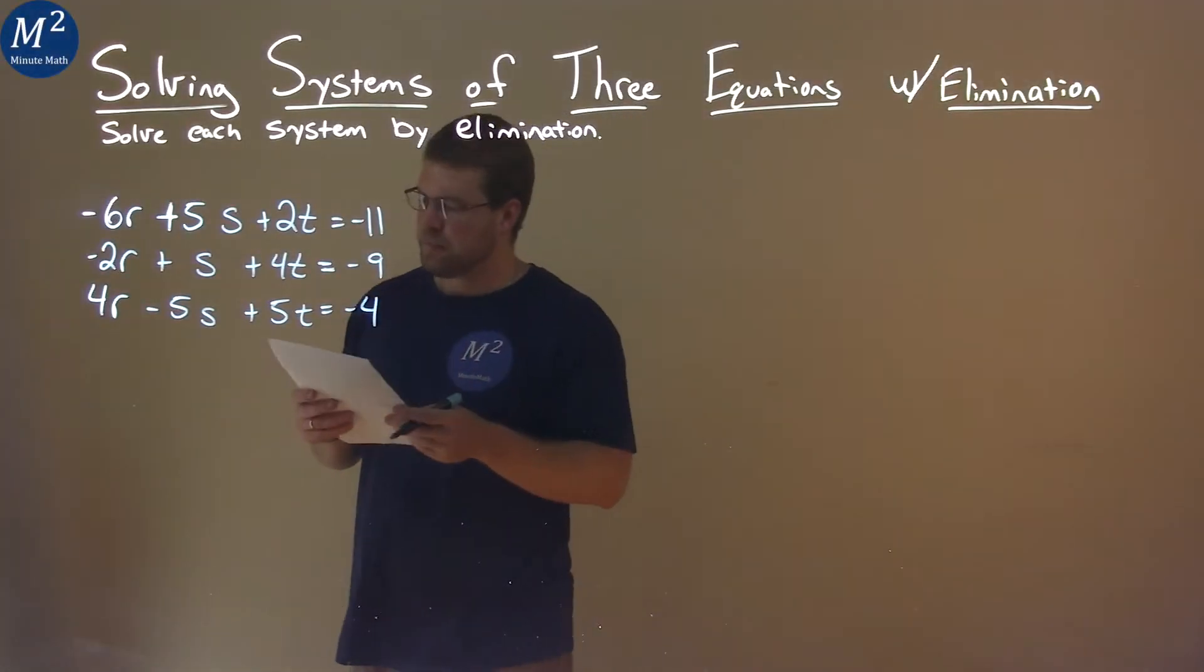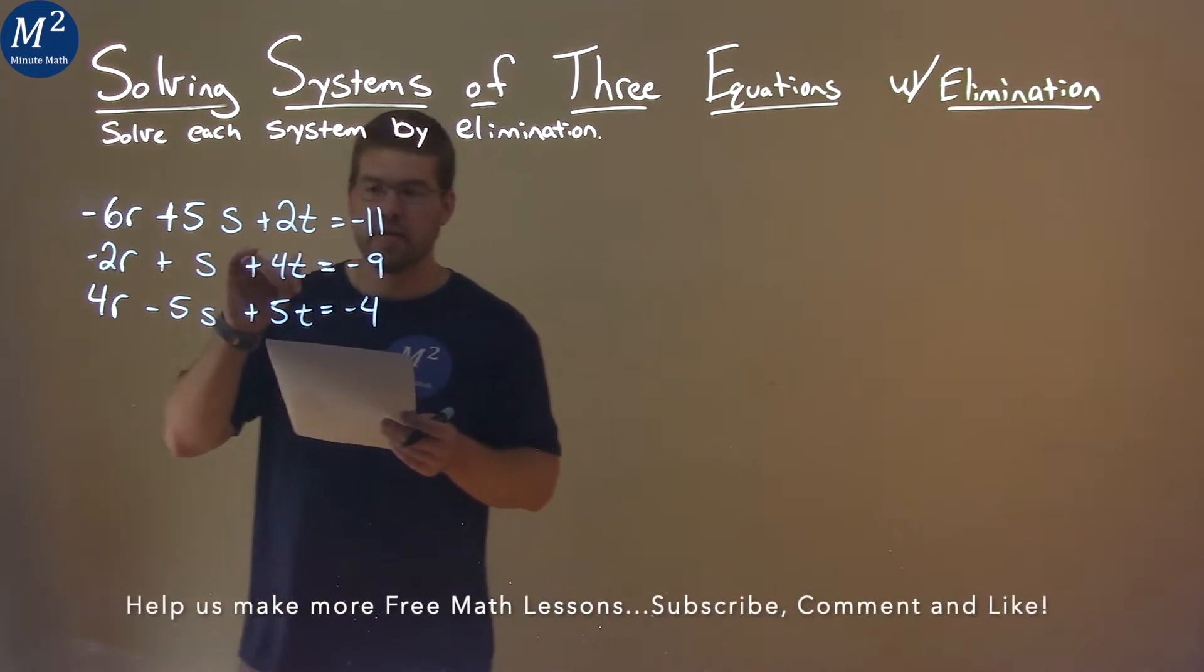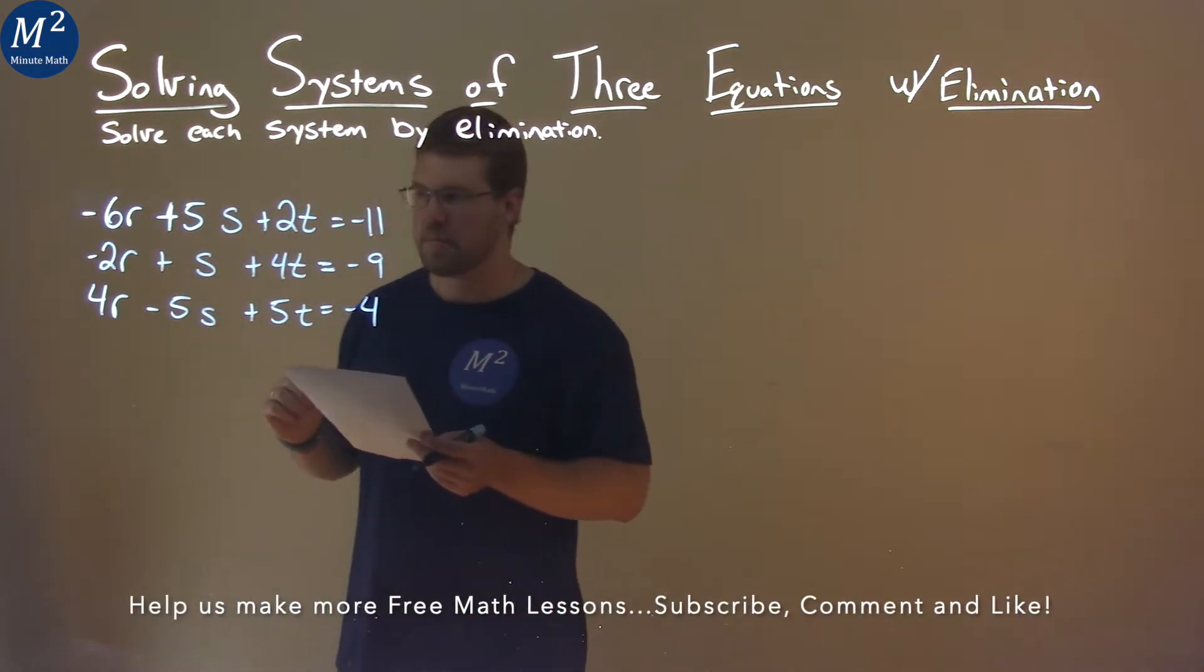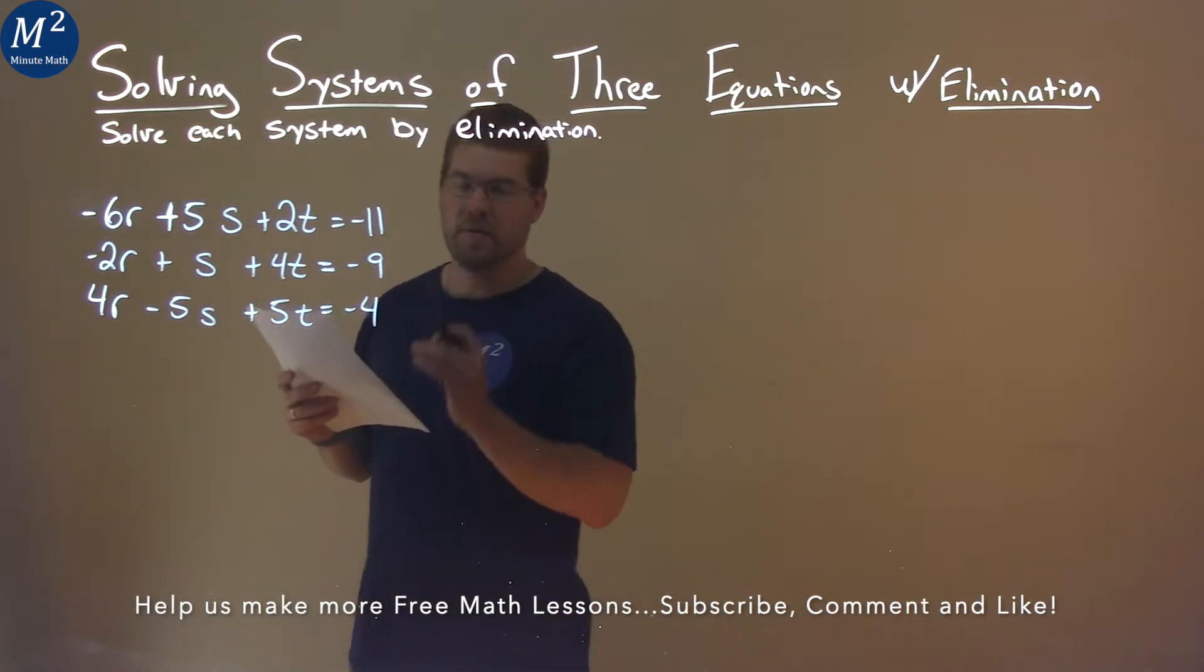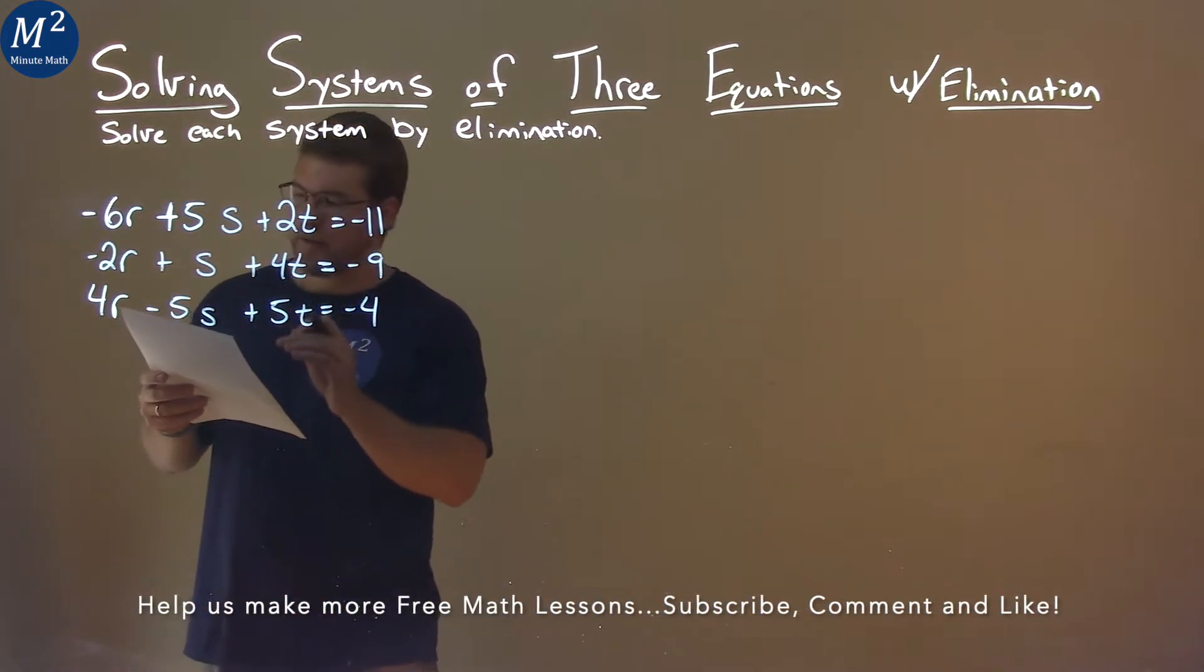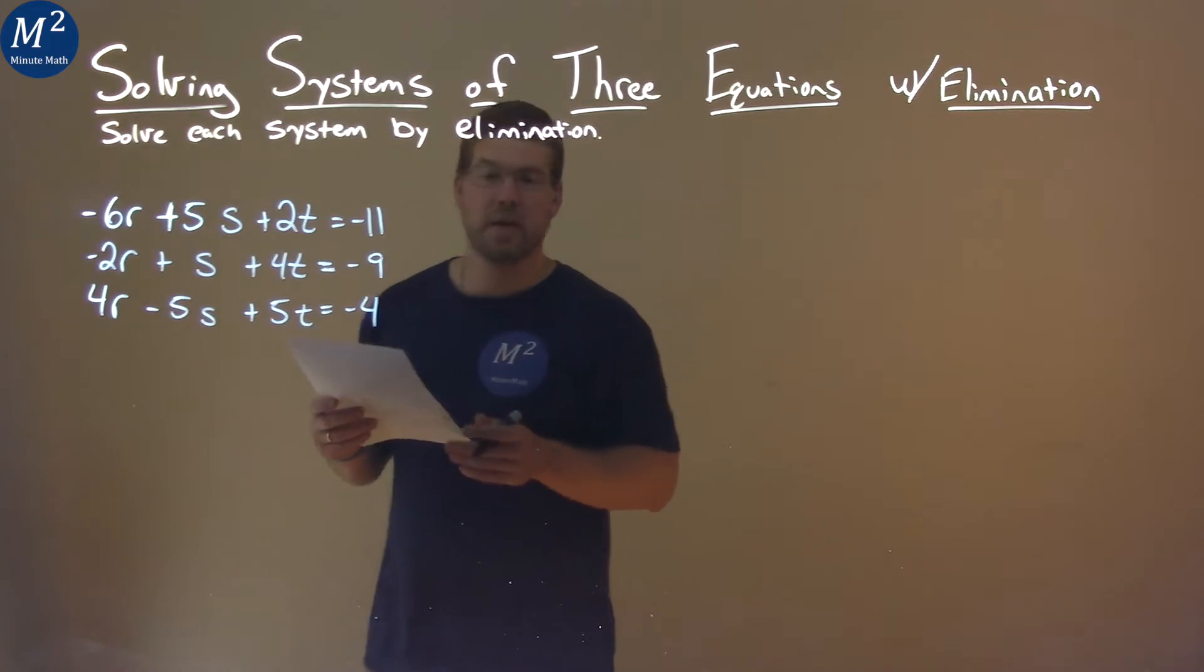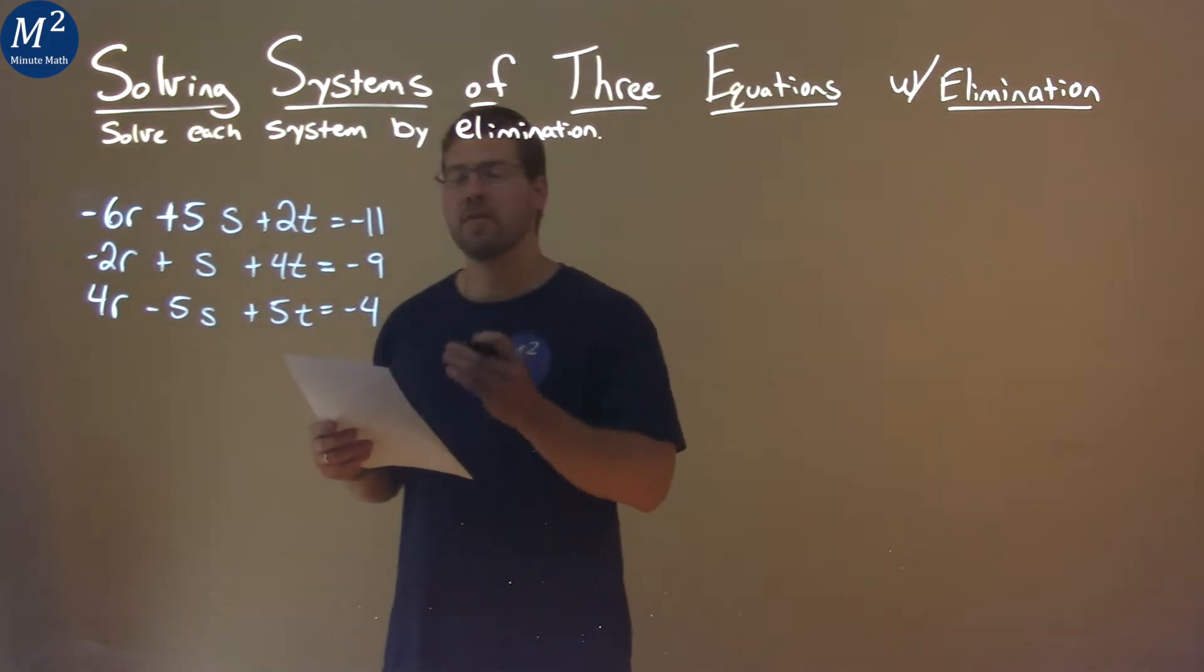We're given this problem right here: negative 6r plus 5s plus 2t equals negative 11, negative 2r plus s plus 4t equals negative 9, and 4r minus 5s plus 5t equals negative 4. We need to solve this by elimination.